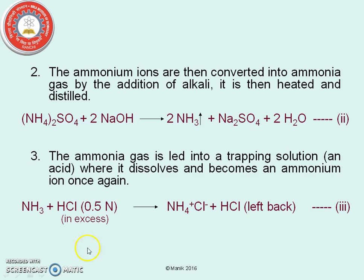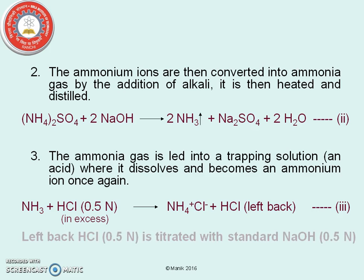In the third reaction, the ammonia which is evolved is trapped in a trapping solution. Here we have taken HCl as a trapping solution, and it is going to form ammonium ion. The amount of HCl taken is in excess, so some amount will be left back, and this left back amount will be estimated. With the help of titration with the standard sodium hydroxide solution, we can estimate the amount of ammonia that has been consumed in this reaction.